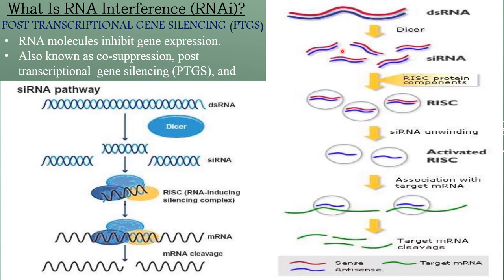In this process, double-stranded RNA will bind with Dicer. This Dicer will cleave the double-stranded RNA into small — about 21 base pair — small interfering RNA, also represented as siRNA, which has 3' and 5' overhangs. To this siRNA, the RISC protein component — that means RNA-induced silencing complex — will bind.